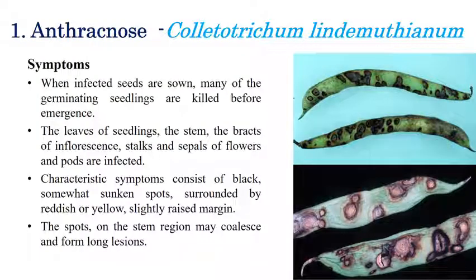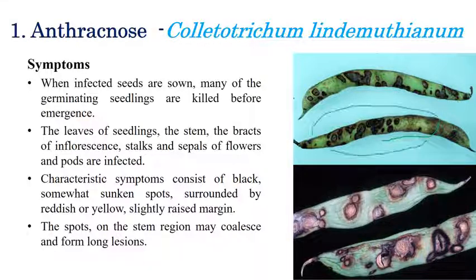The first disease is anthracnose, caused by Colletotrichum lindemuthianum — a very important disease in beans. Symptoms can be found not only on pods but also on stems, bracts, inflorescence, petals, and sepals.